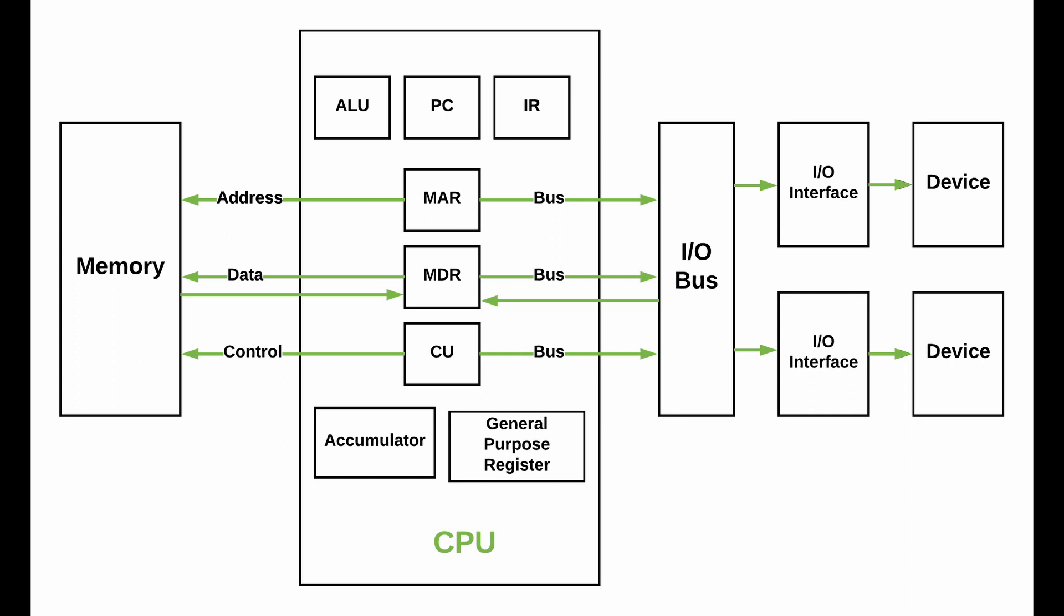This means that von Neumann chips have to constantly shuttle information back and forth between the memory and CPU, causing delays and wasting energy, a problem known as the von Neumann bottleneck.